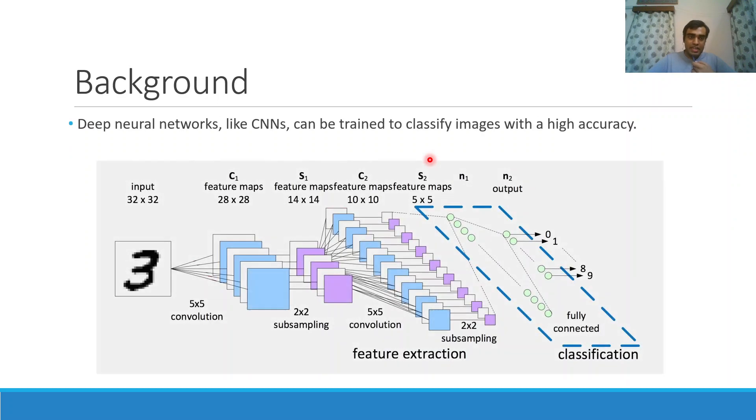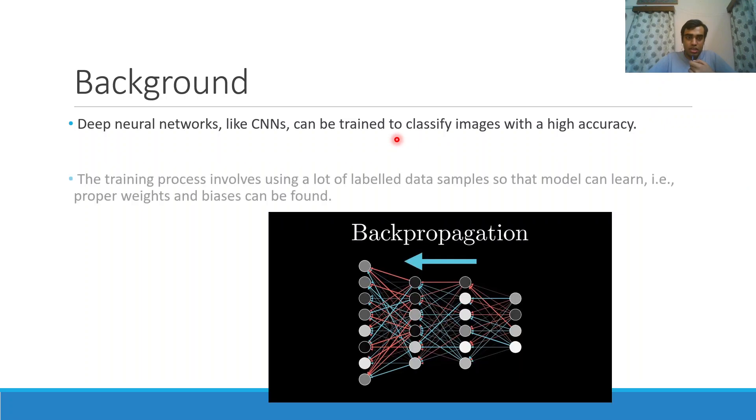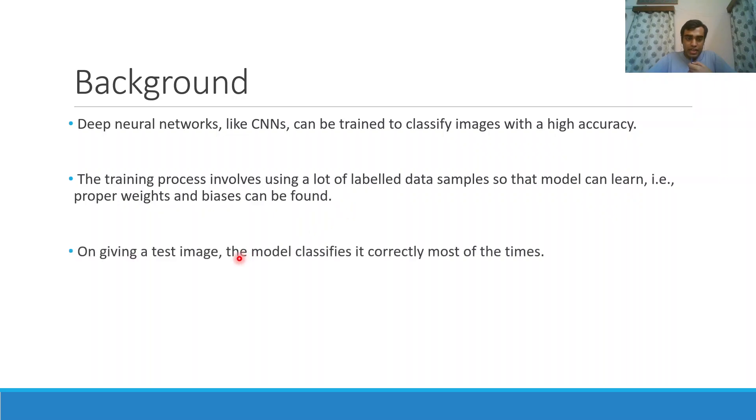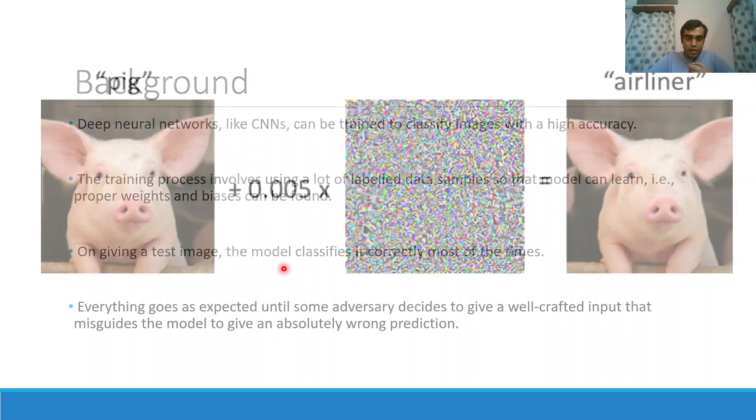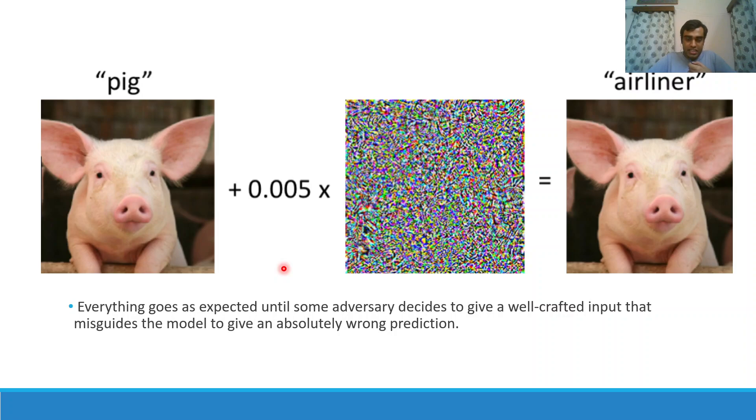To provide some background, deep neural networks like CNNs can be trained to classify images with very good accuracy. During training phase we provide the model with a lot of labeled data samples so that the model can learn the proper weights and biases values. After training, on giving a test image, the model classifies this correctly most of the time. But if the designer of the model does not keep in mind an adversary trying to deliberately fool the model, then the model will not be very robust.